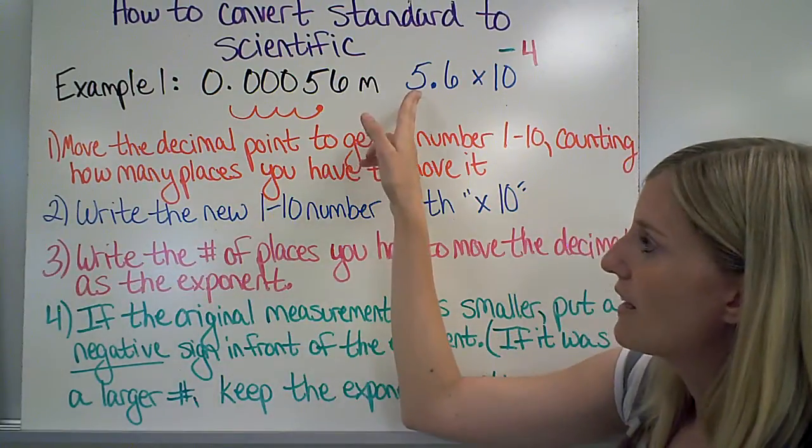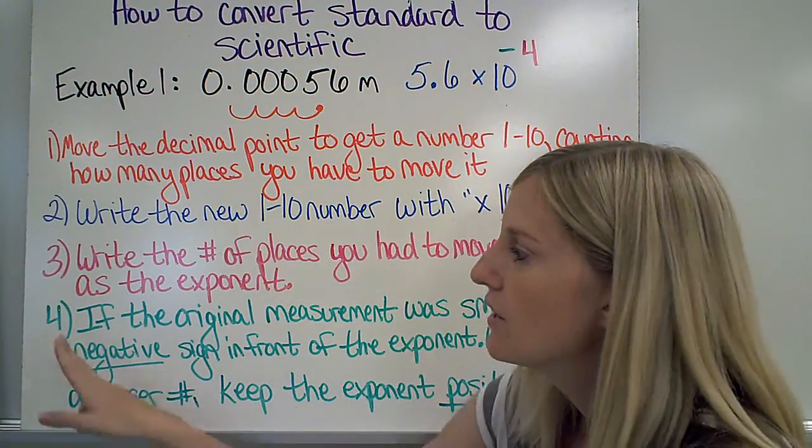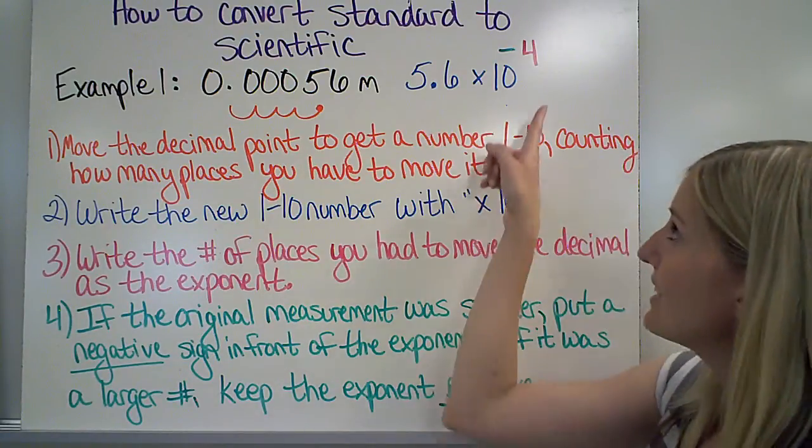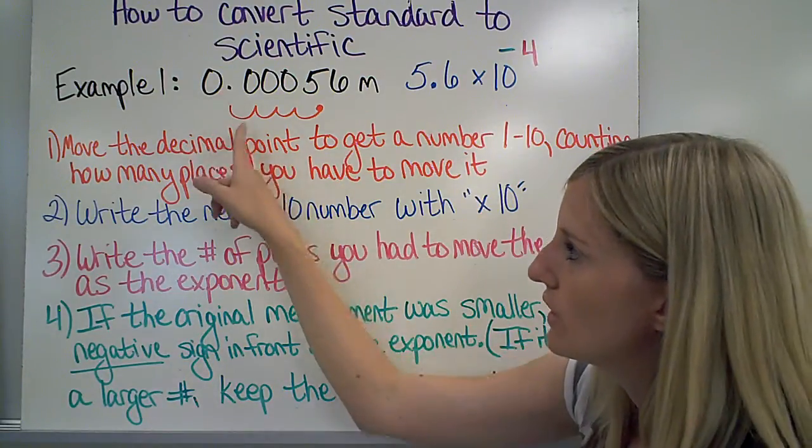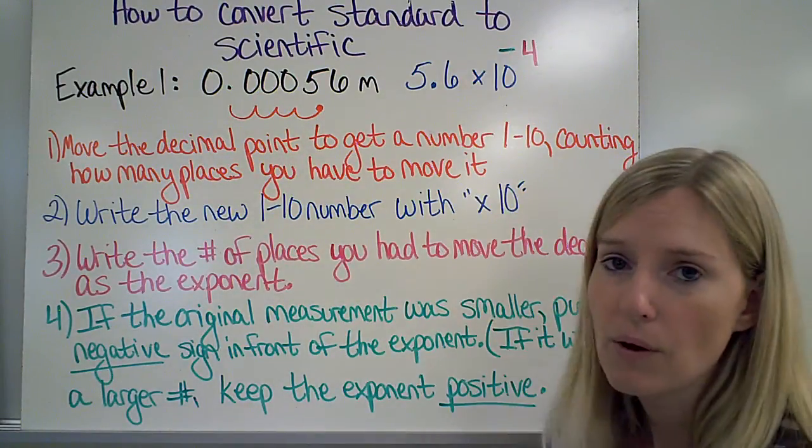Second step is to write that number with a times 10 after it. Third, I'm going to write how many places I moved it as the exponent. So I moved it 1, 2, 3, 4 places. So that's my exponent.